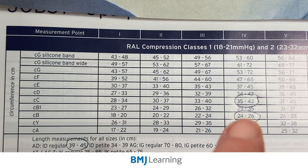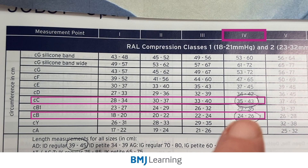Here you can see that the ankle measurement fits nicely into size 4. The calf measurement, too, luckily fits into the same line. So I'm absolutely certain that a compression class 1 garment, size 4, regular length — because it's 40 cm, which fits nicely into that grid — is going to fit this particular patient.